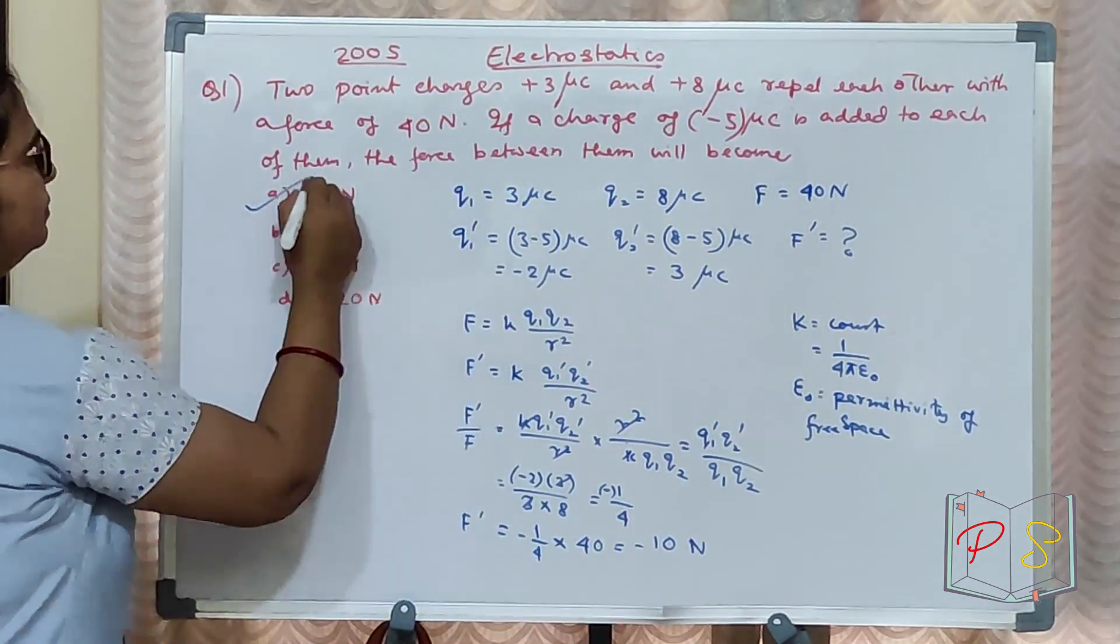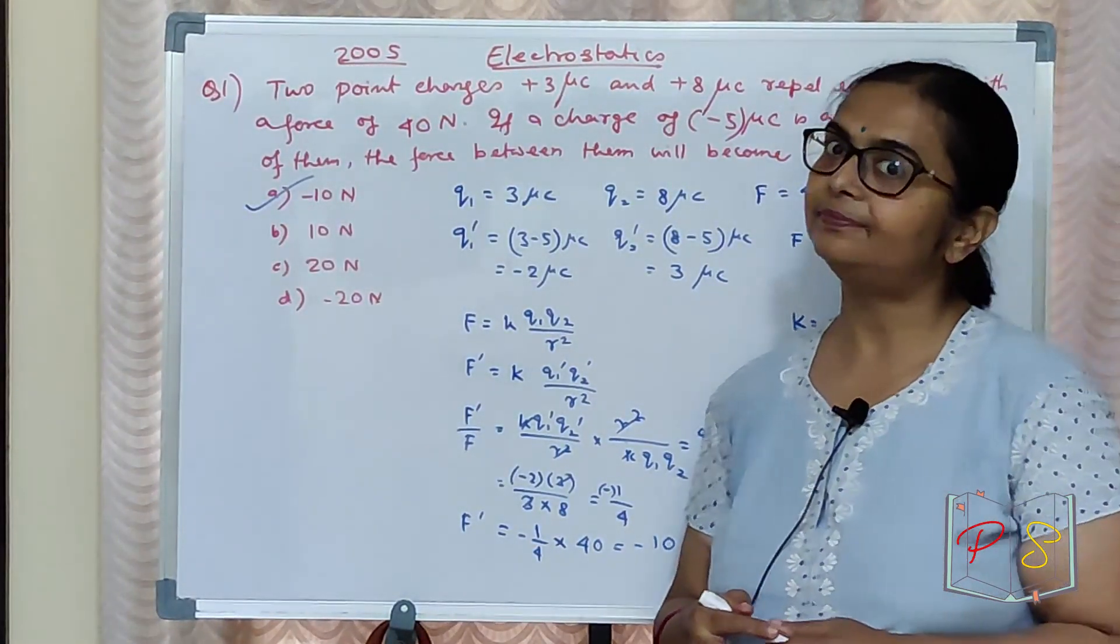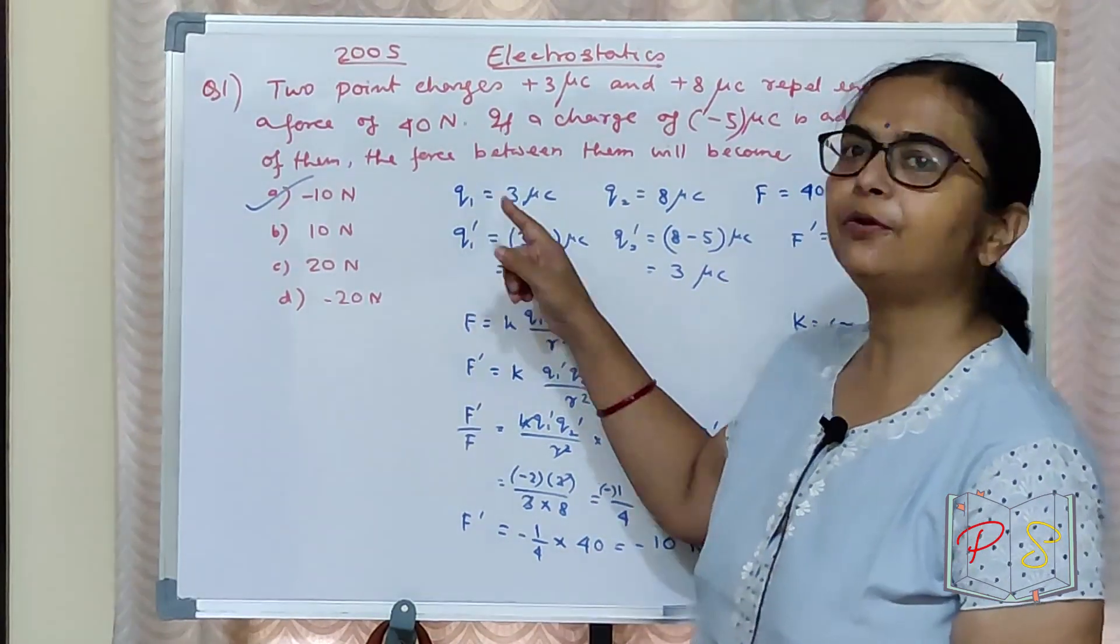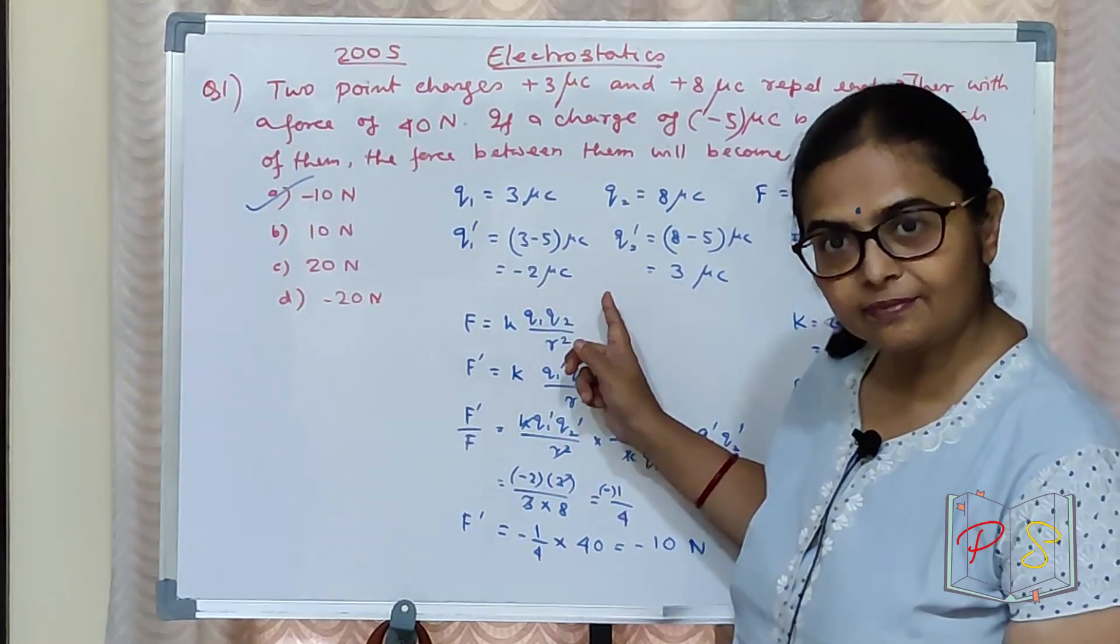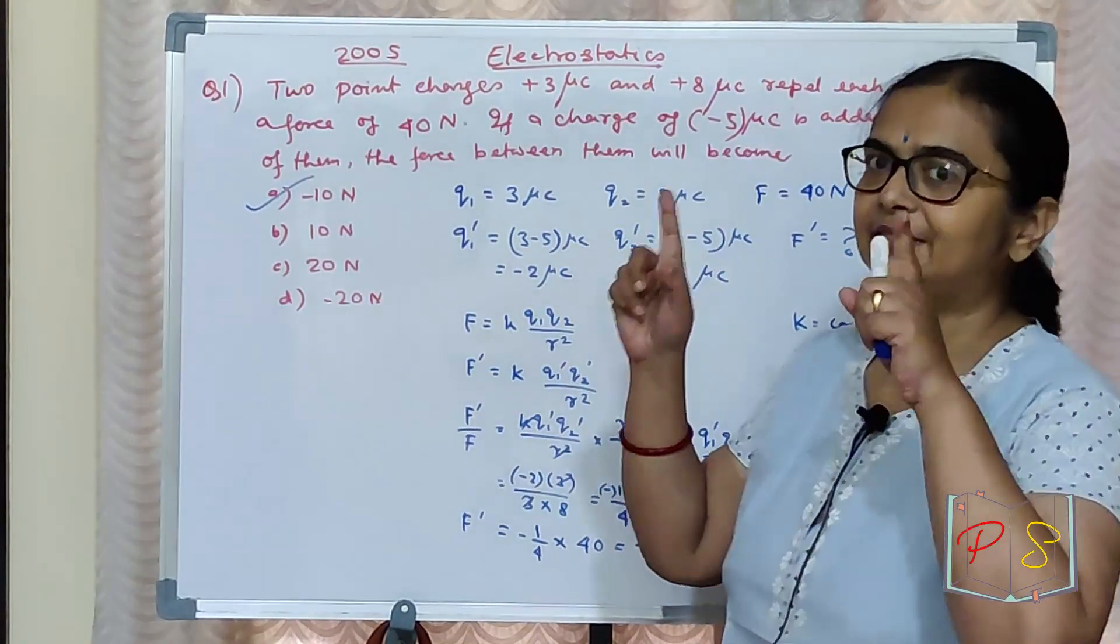Option? Option A is your correct option. You know how to do it? Applied Coulomb's Law. What does Coulomb's Law say? Force between two charges is directly proportional to product of the charges and inversely proportional to the square of the distance between them.